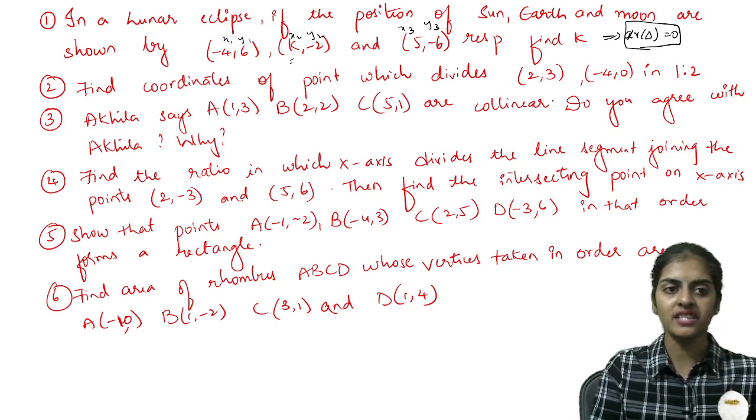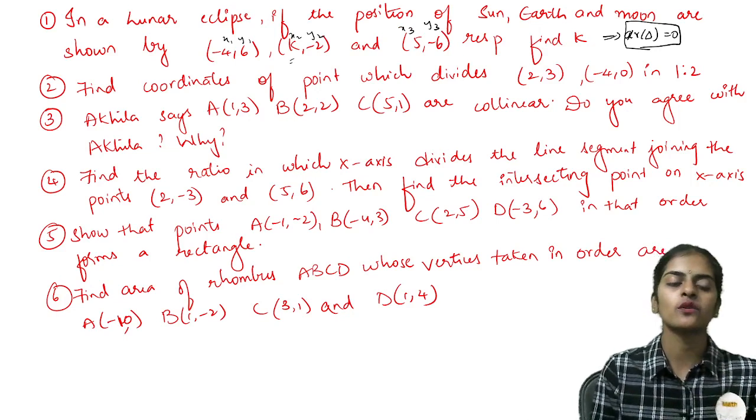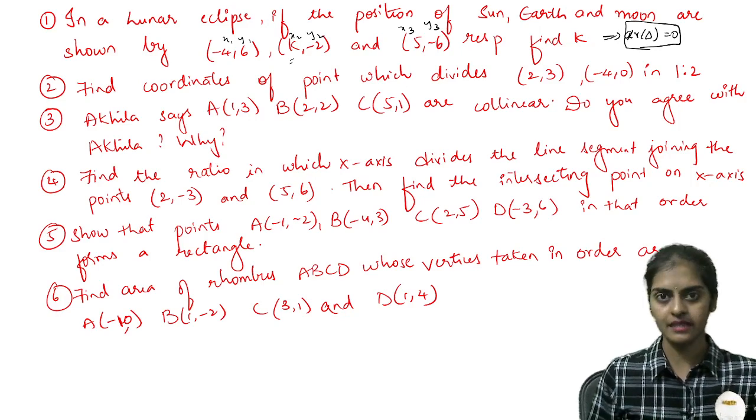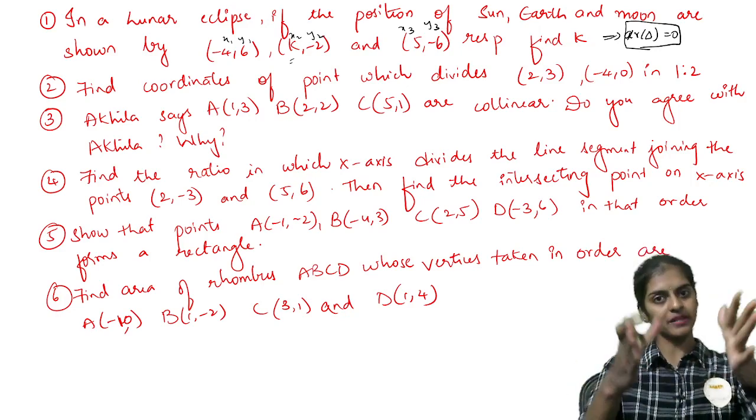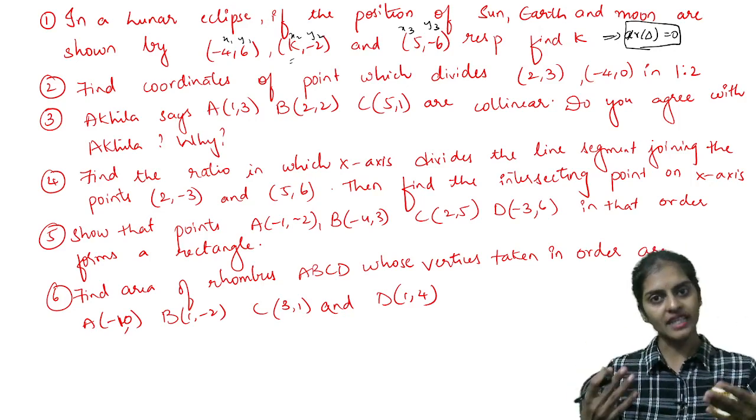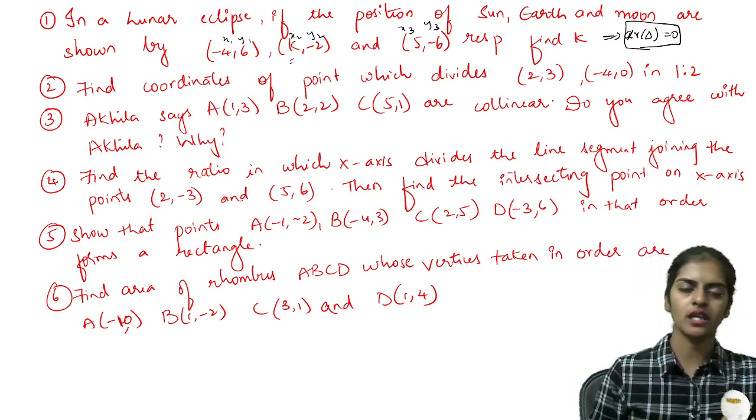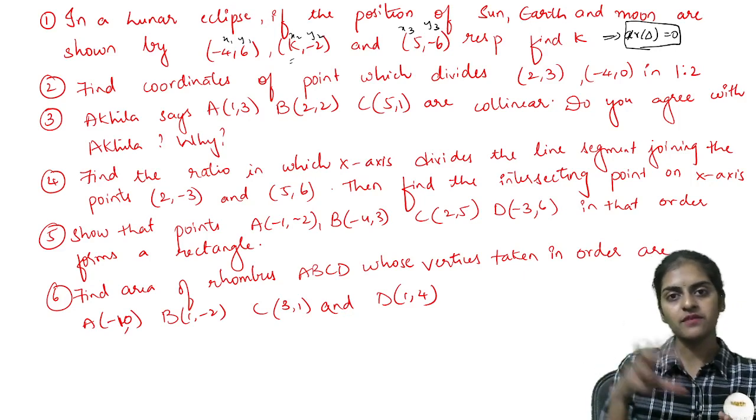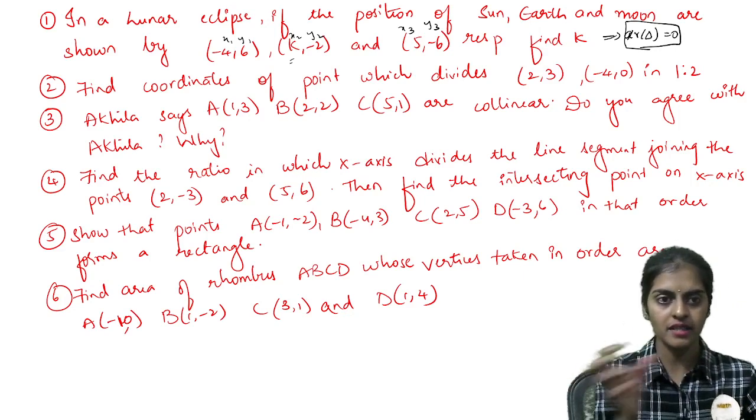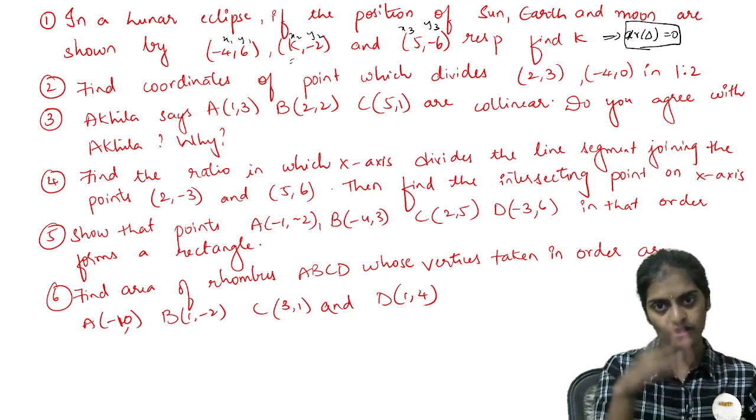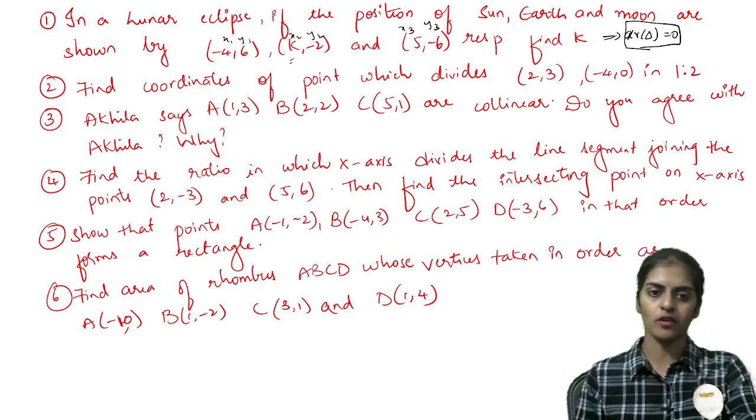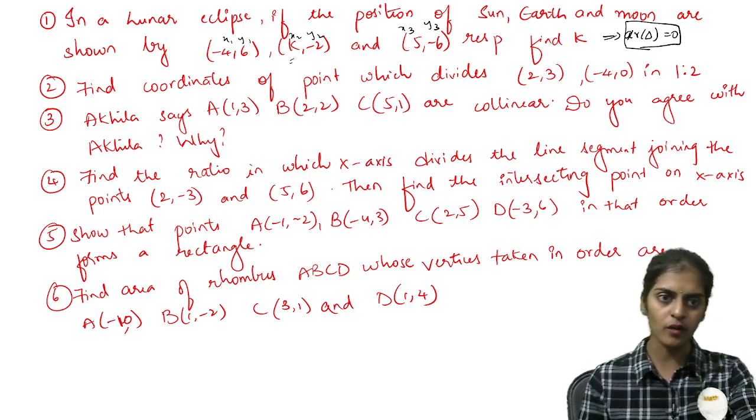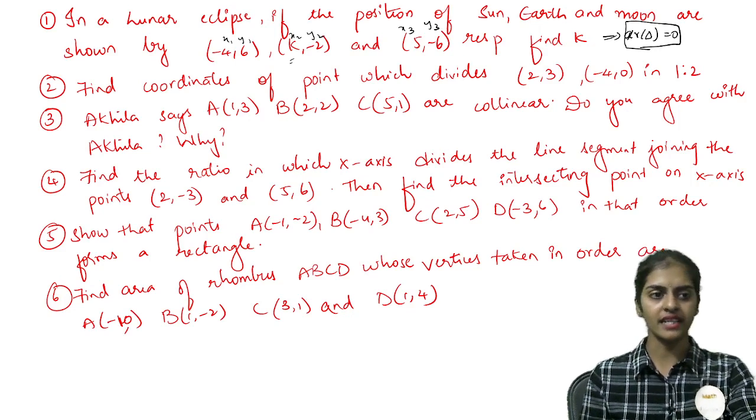Now here in the question, they try to twist you a little. In a lunar eclipse, the position of sun, moon and earth - you have learned in your class 8 that sun, moon and earth will be in the same line. Then only eclipse is formed. So when they are in the same straight line, when the positions are given, which means those are collinear points. So you need to find the value of k, which means area of triangle is 0.